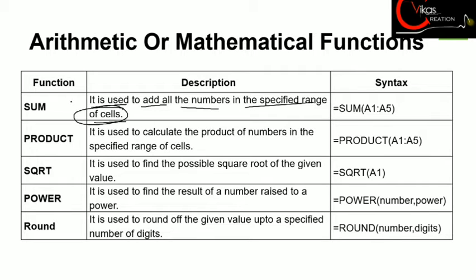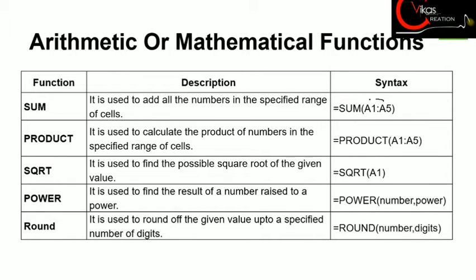The SUM function is generally used to add the numbers in the given range of cells. The syntax is written as: equals to SUM(A1:A5), where A1:A5 is a demo range of cells. It simply shows that you have to write a cell range.